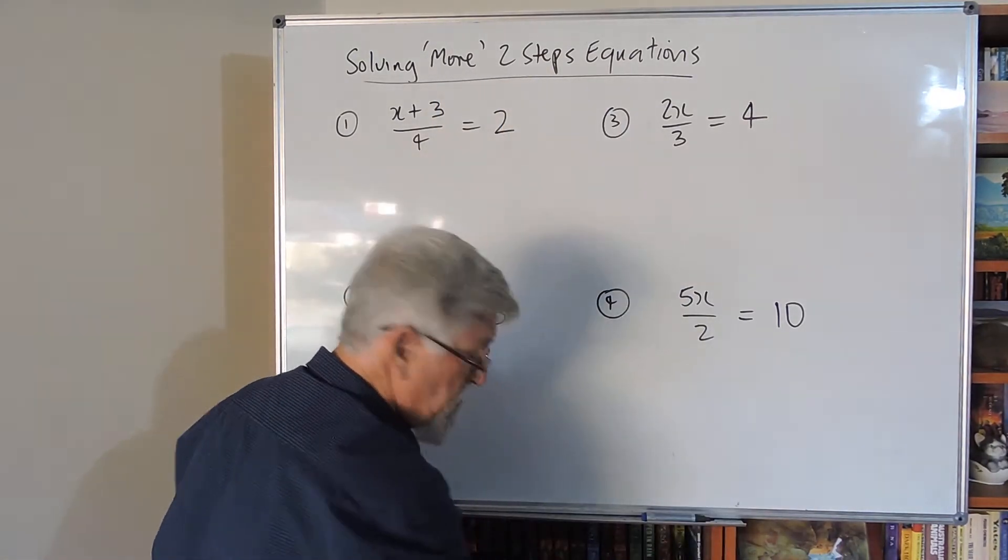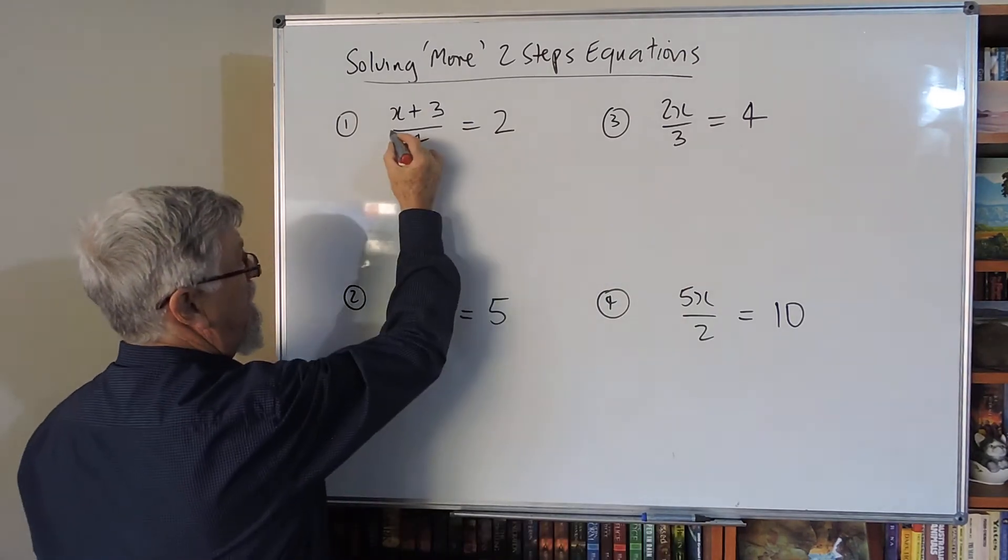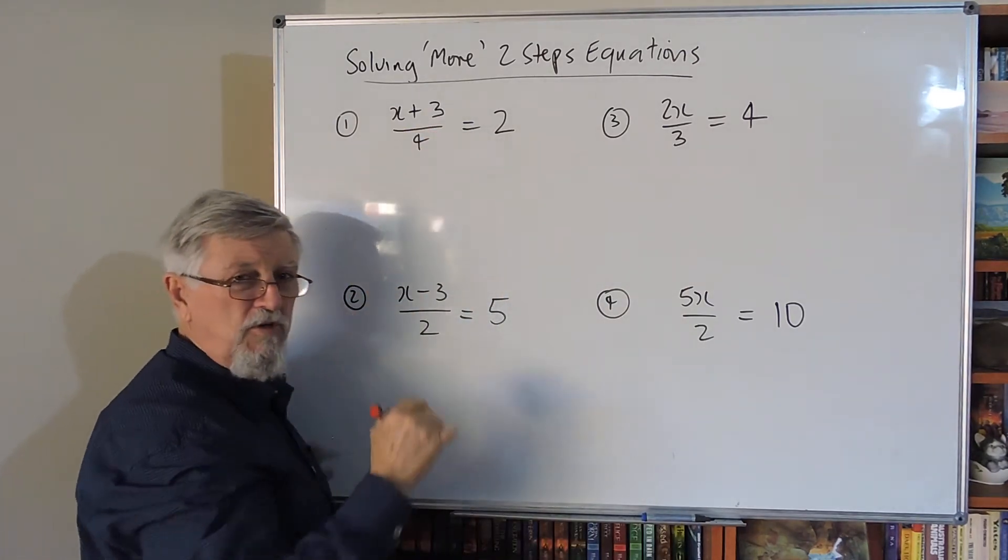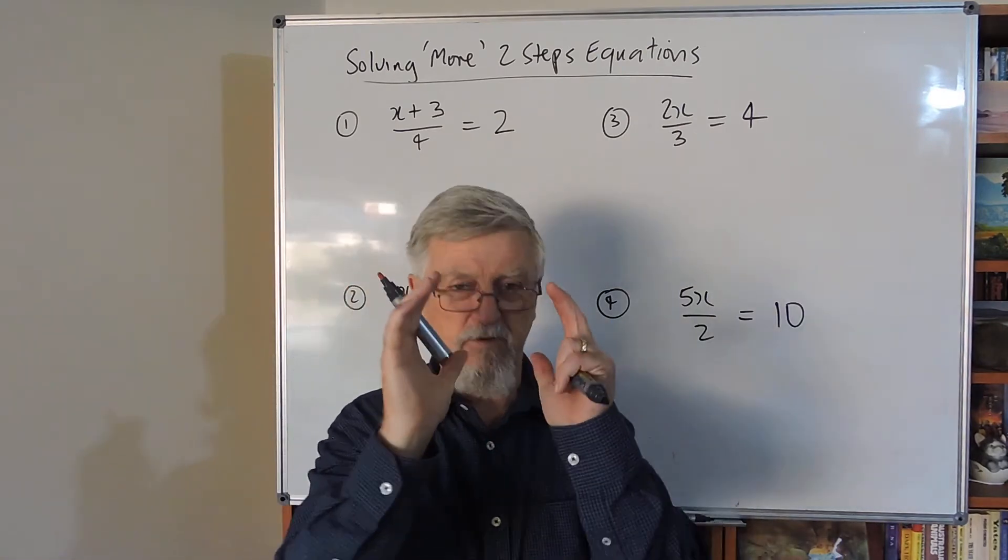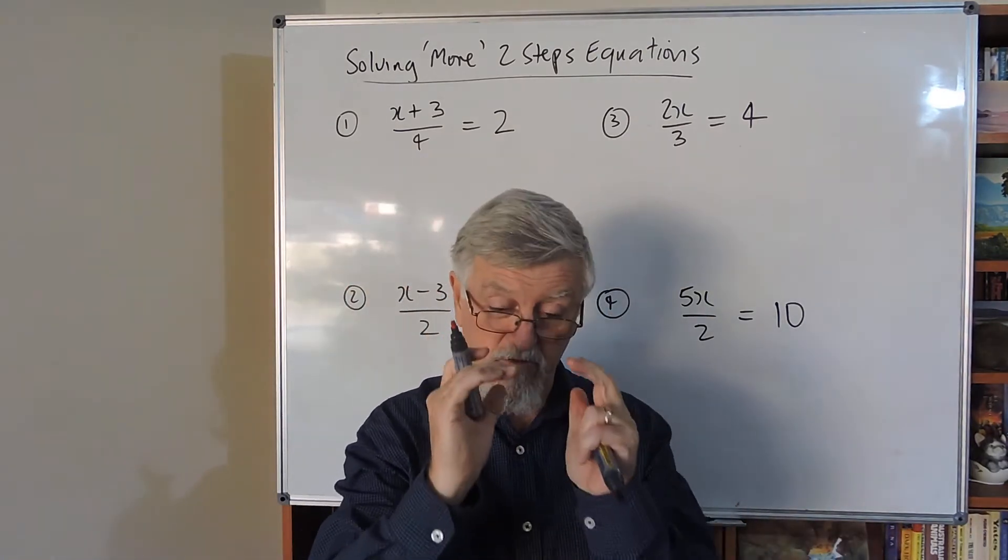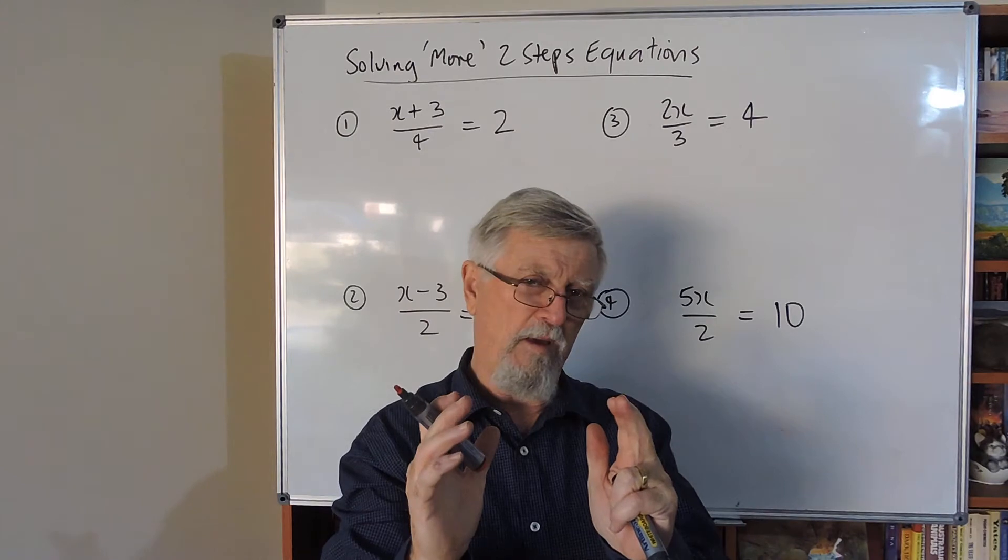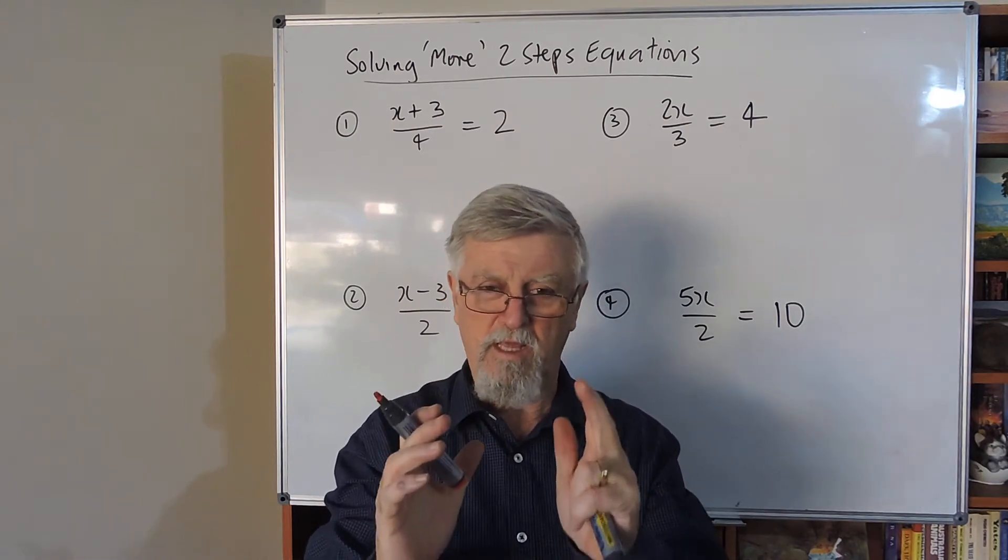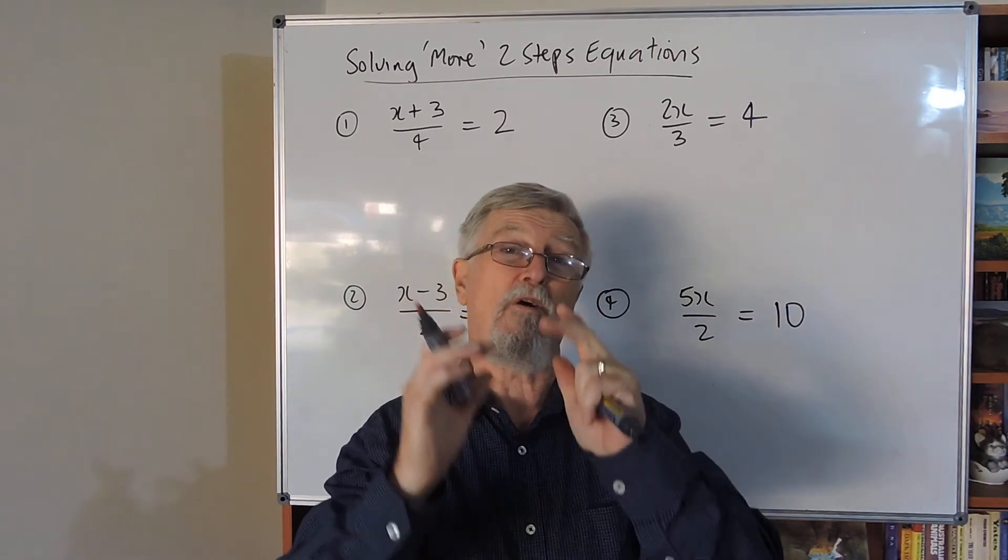This is also showing you why it's wrong. There's actually that line there—that fraction bar actually means a bracket. It means whatever's above it has a bracket around it, and whatever's below it has a bracket around it. When you talk about BIMDAS or whatever you want to call it, BOMDAS depending where you're from, or the operations—